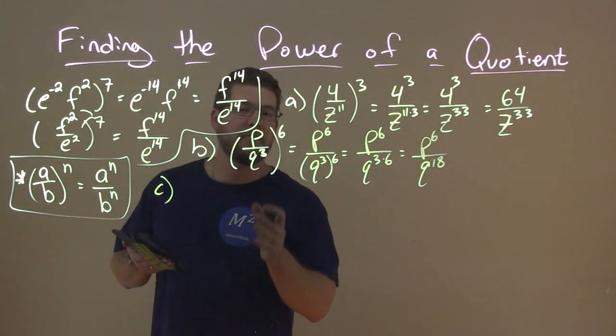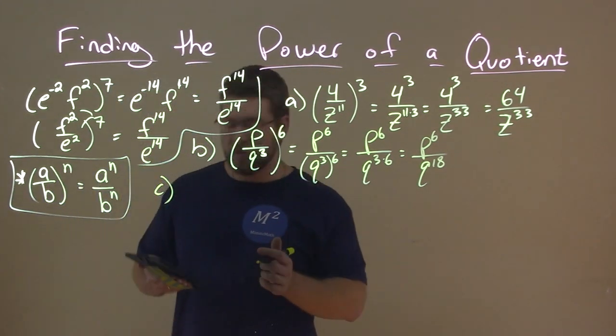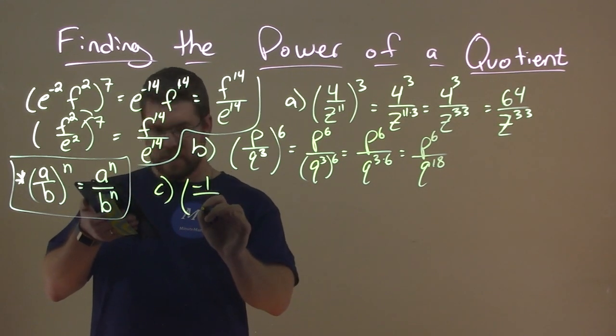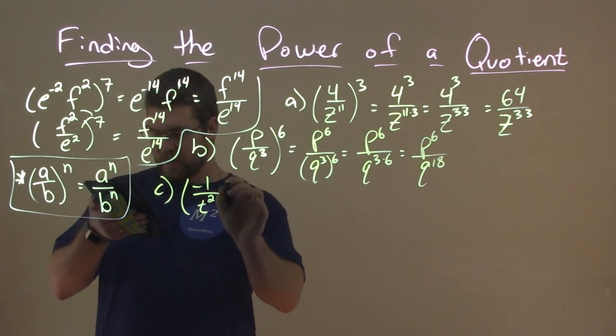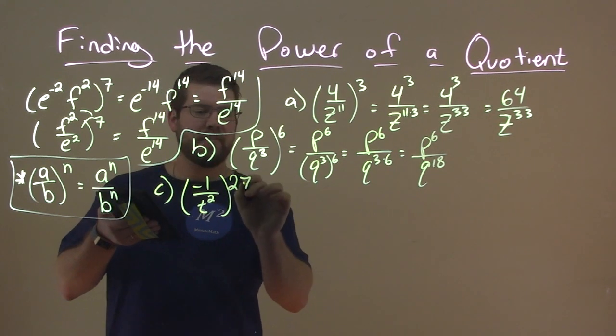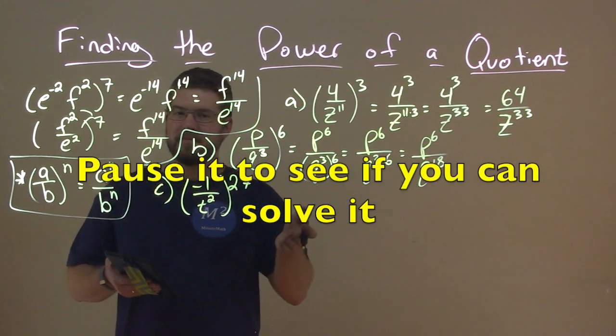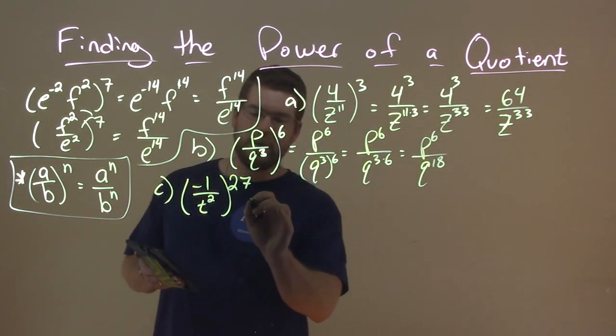Let's go with c. And of course, pause this video once I write it and see if you can solve it first. Negative 1 over t squared all to the 27th power. All right, pause it. See if you can solve it. And then we'll get back into it. All right, let's go.